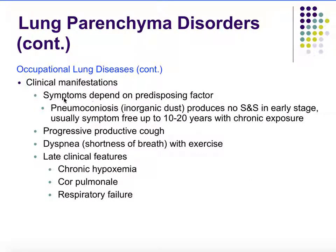Clinical manifestations depend on the predisposing factor. In pneumoconiosis, signs and symptoms don't appear in the early stages; they occur maybe 10 to 20 years after chronic exposure. People who worked in coal mines had no issues until perhaps 10 to 20 years later or even after retirement. Symptoms include a progressive productive cough, dyspnea — shortness of breath especially with exercise. Late clinical features include chronic hypoxemia, cor pulmonale, and respiratory failure.